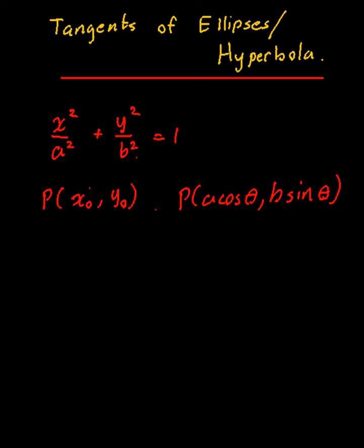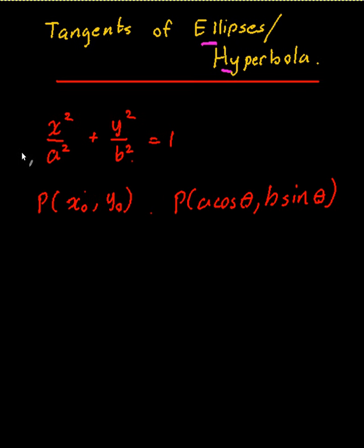In this video, I'm going to be showing you how to derive the tangents of either an ellipse or a hyperbola. I'm going to start off with the case of an ellipse and then go on to prove it for a hyperbola. The only difference with the hyperbola is that this term over here is a minus instead of a plus, but let's deal with that later.